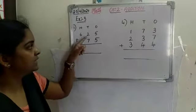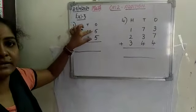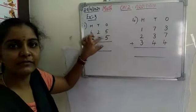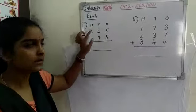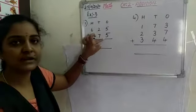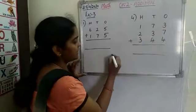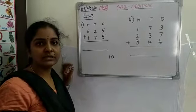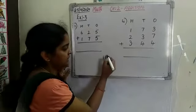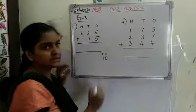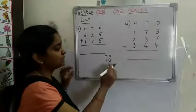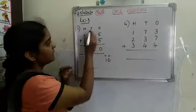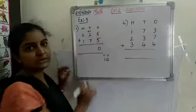Now see here in the ones place we are having 5 and 5. So how will you add 5 and 5? 5 in the mind and 5 fingers up — so 5 plus 5 is nothing but 10. We got a 2-digit number. So how will you write this 2-digit number? This is ones place and this is tens place, so 0 in ones place.